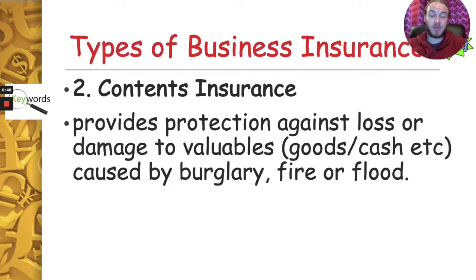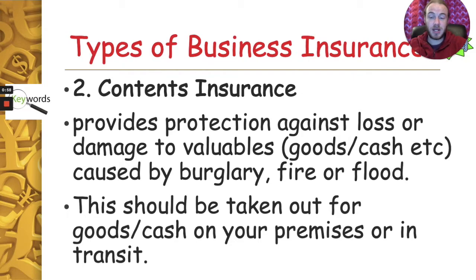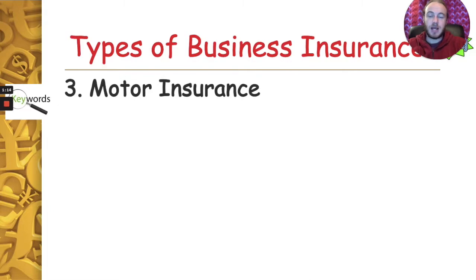The second type of insurance is contents insurance, and that provides protection against the valuables or goods inside the business — be it physical goods or cash. These losses are usually caused by burglary, fire, or flooding. This should be taken out for goods or cash within your premises, or for goods that are in transit between your business and another premises or your customer.